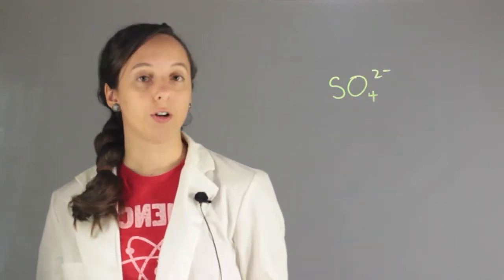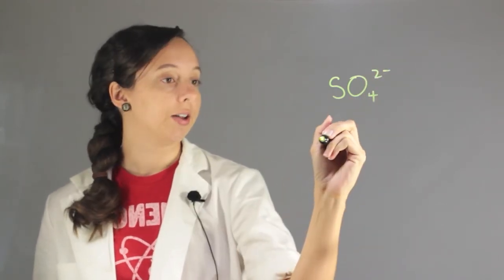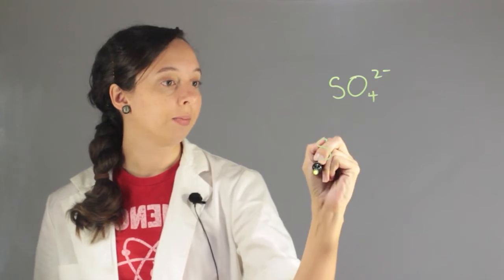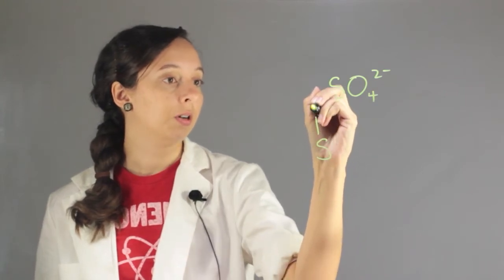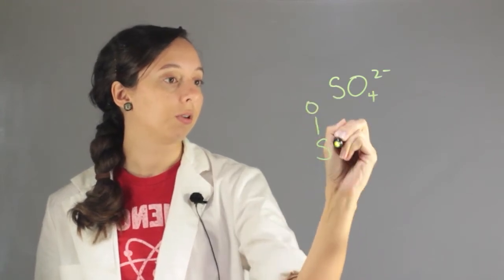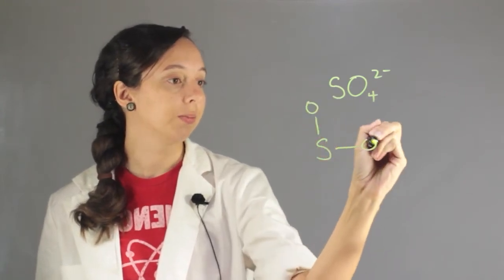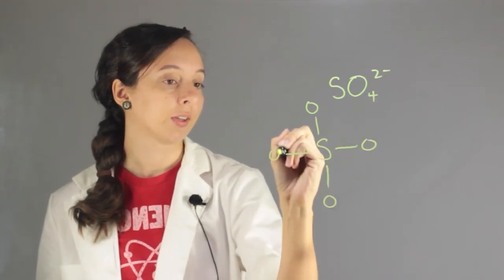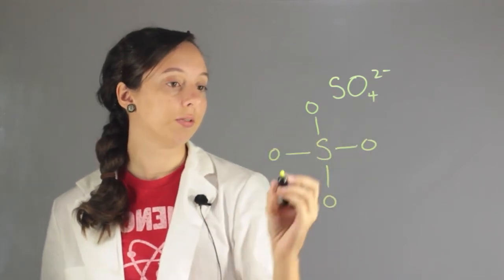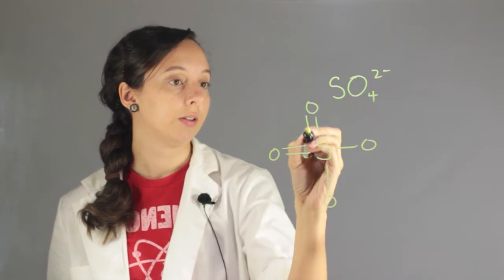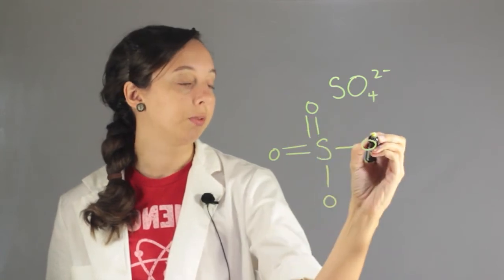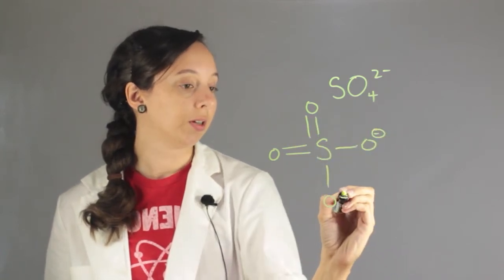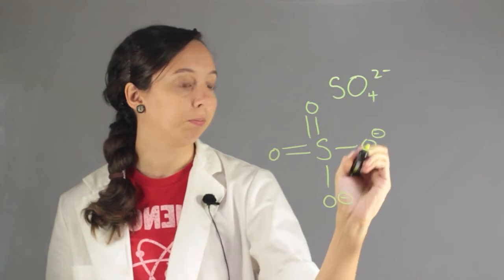If we draw this out, it has the sulfur as its central atom and it's bonded to four oxygens. Two of those oxygens are double bonded and two of them are single bonded with a negative charge. This is where the 2 negative comes from.